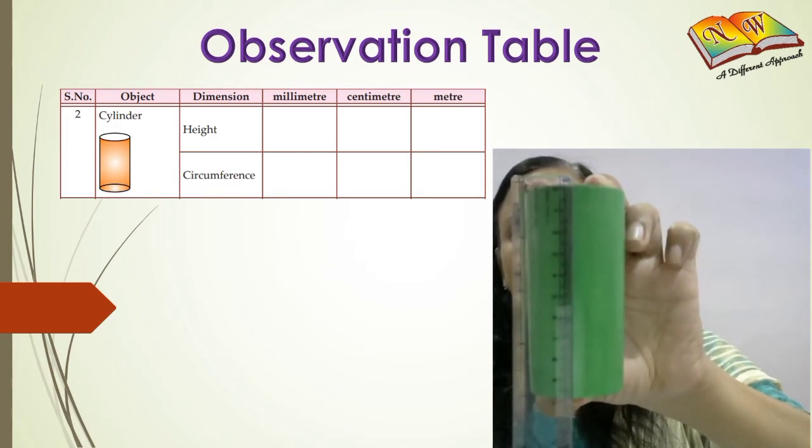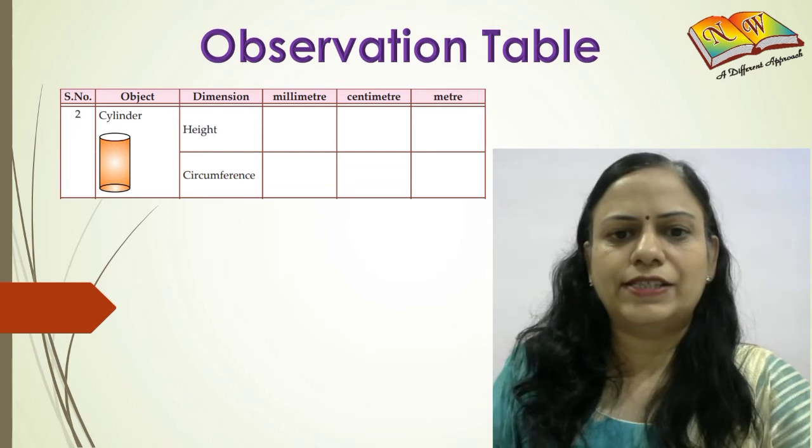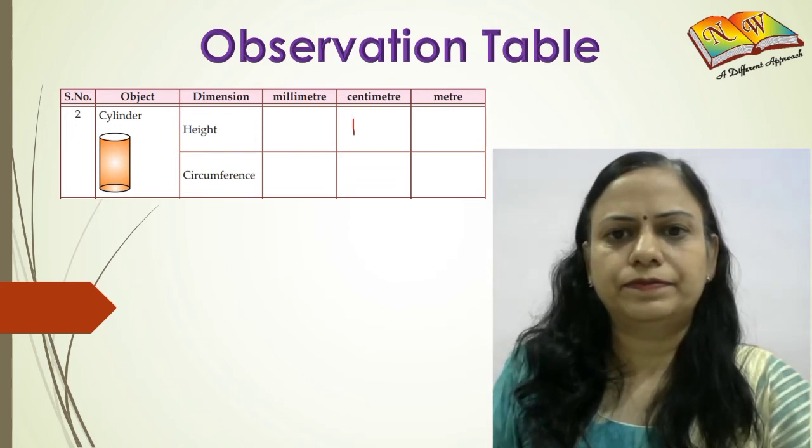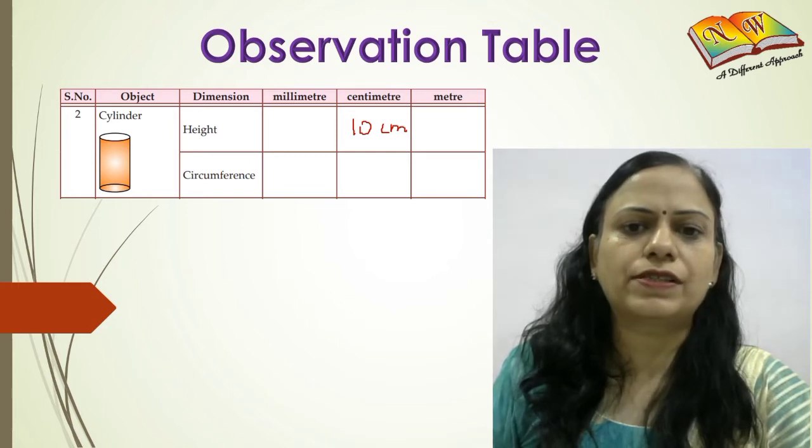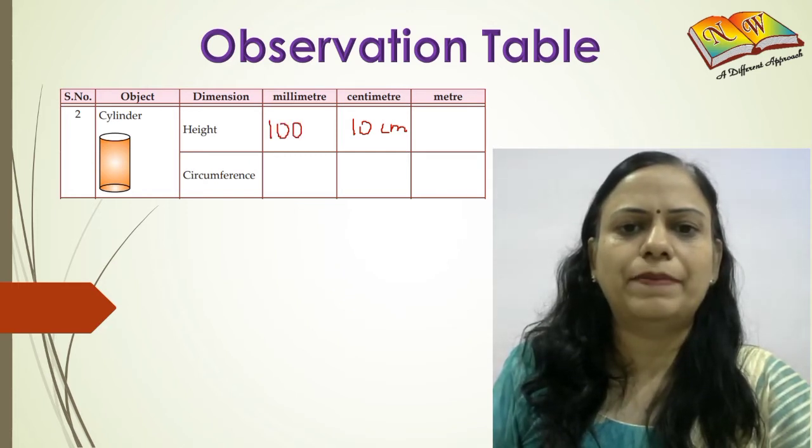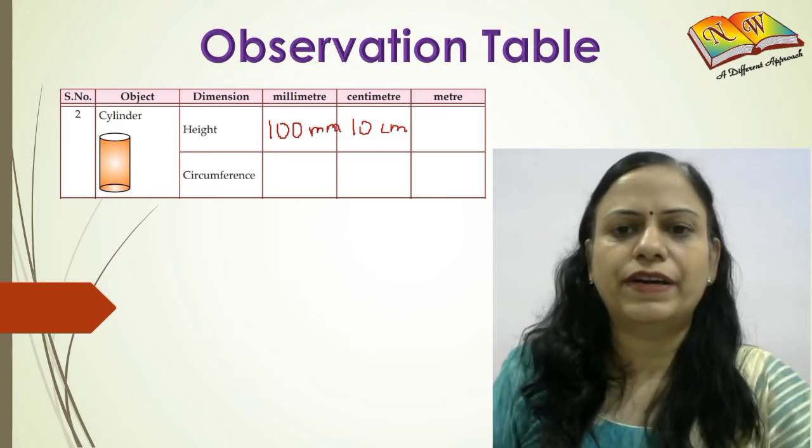And just as we did earlier, 10 centimeters means 100 subdivisions on the millimeter scale, that makes it 100 millimeters. And when you divide it by 100 to convert it to meters, it makes it 0.1 meters.